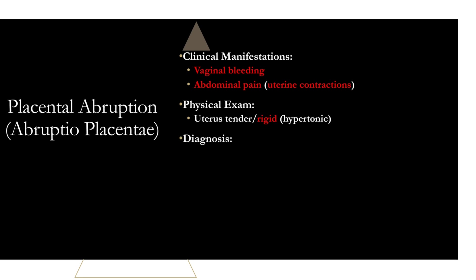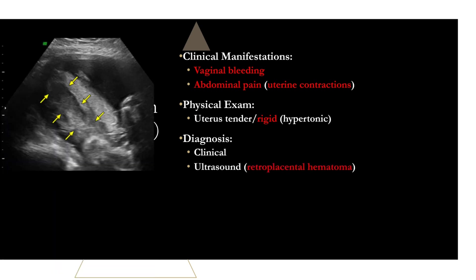Diagnosis of acute placental abruption is mainly clinical. Suspect it in any pregnant patient with abrupt onset vaginal bleeding, abdominal pain, and contractions, especially with uterine tenderness and increased tone. Other supportive findings include fetal heart rate abnormalities and disseminated intravascular coagulation. Ultrasound can also be helpful — the classic finding to know is a retroplacental hematoma, a clot behind the placenta. If present, this strongly supports the diagnosis. On an exam question, if you see this mentioned, it's a placental abruption. In real life it can be absent, but if present it's a slam dunk.